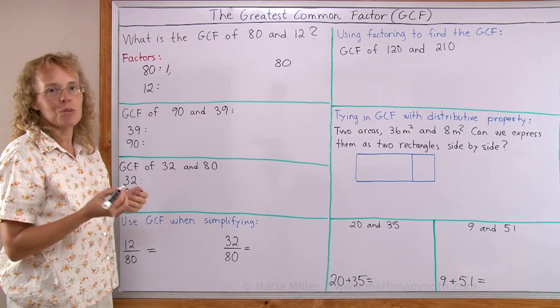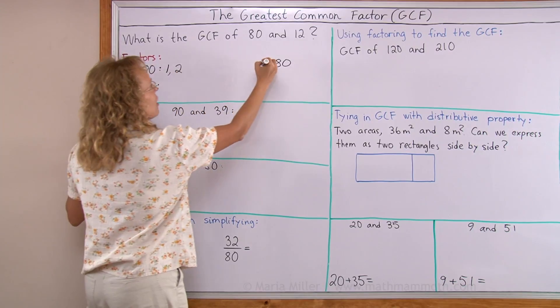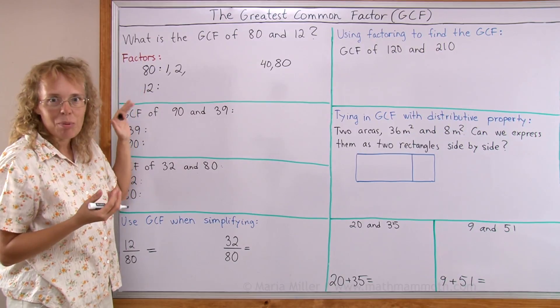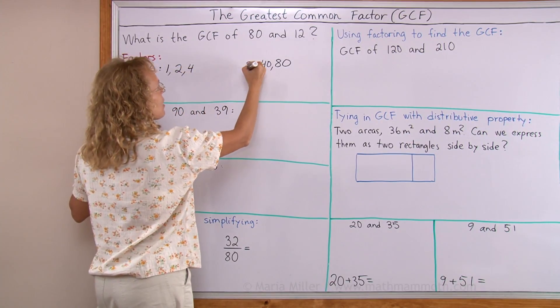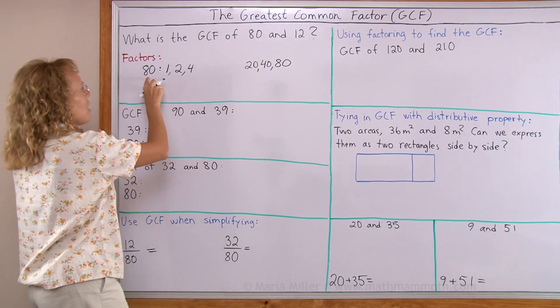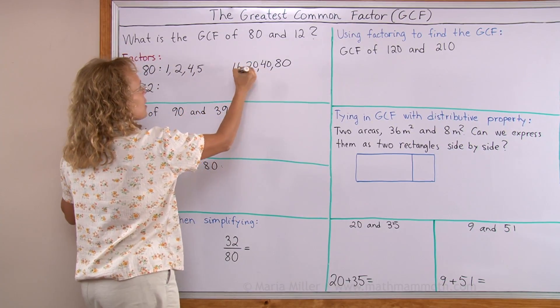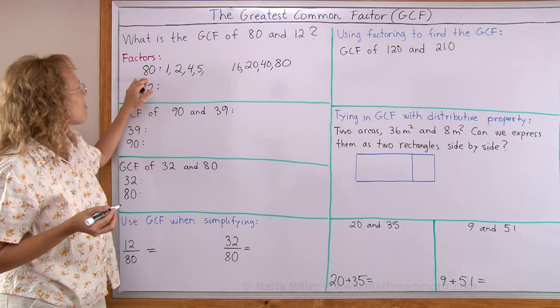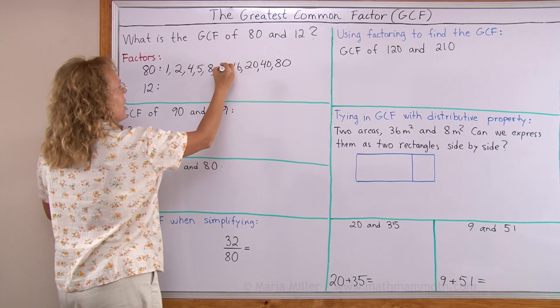Then I go to 2—2 times. And 80 is divisible by 2, it is 2 times 40. And then I go to 3—3 times, but it's not divisible by 3. So 4, 4 times something, it is 4 times 20. And then 5, yes it is divisible by 5, it is 5 times 16. It's not divisible by 6, nor by 7, but it is divisible by 8, 8 times 10.